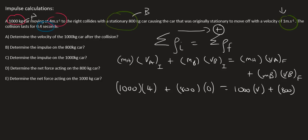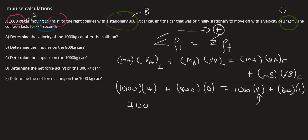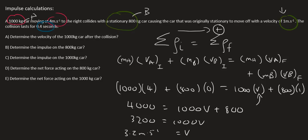People sometimes ask how we know which direction. Well, it's obvious — you've got car B parked over here, it gets hit from the left hand side because car A was initially moving right. So obviously it's going to cause car B to move to the right. We don't know what's going to happen to car A, but the maths will sort that out. So we've got 4000 on the left, 1000V plus 800, that gives us 3200 equals 1000V, so velocity equals 3.2 meters per second. Because it's a positive answer and we chose right as positive, that will be to the right.